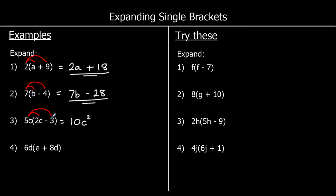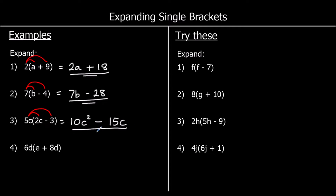5c times a negative 3: a positive times a negative is negative. And we've got 5 times c times 3. We can times 5 and 3 together to get 15. And 15 times c we write as 15c.